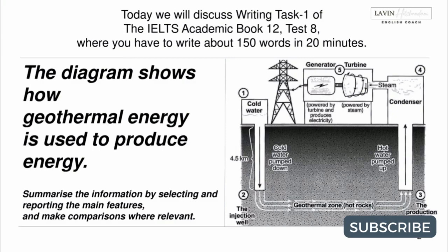Today we will discuss writing task 1 of the IELTS academic book 12, test 8, where you have to write about 150 words in 20 minutes. The diagram shows how geothermal energy is used to produce energy. Summarize the information by selecting and reporting the main features and make comparisons where relevant.